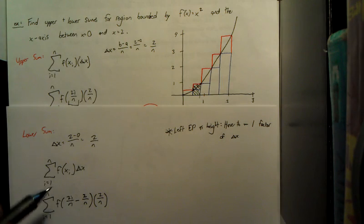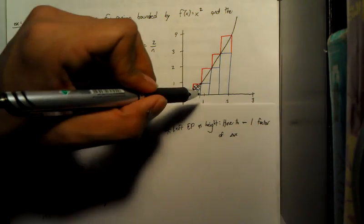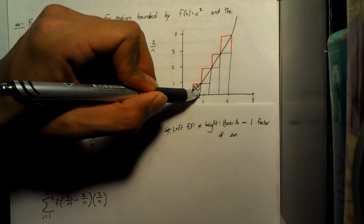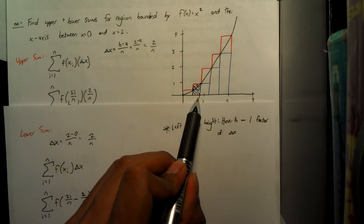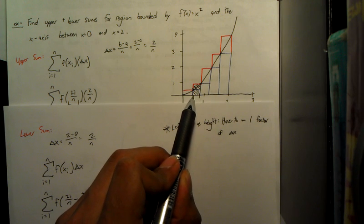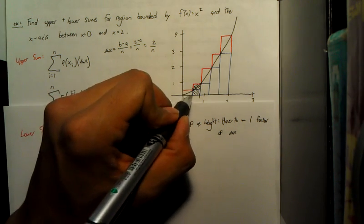But when you do this 2i over n, then when you pop in that 1, you're coming to the far right of the first rectangle. So you're going to have to subtract a factor of your change in x in order to get the height that you want for that rectangle.